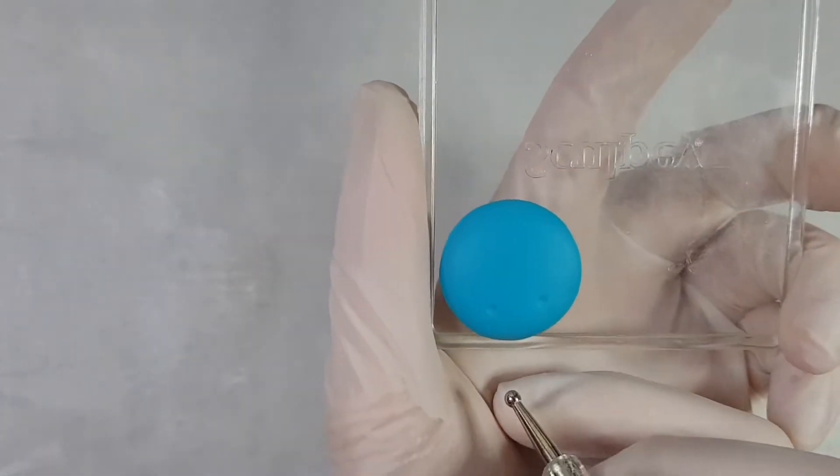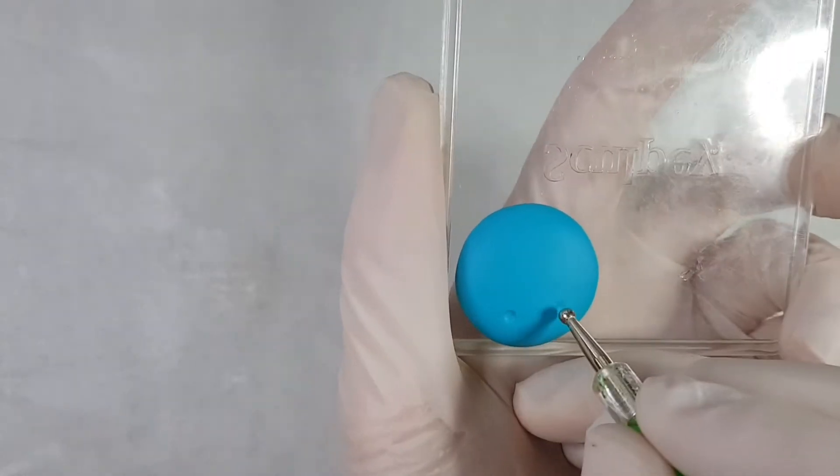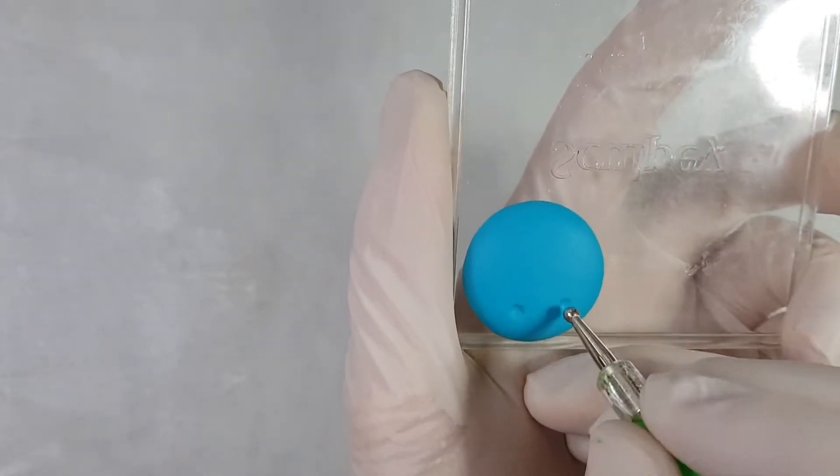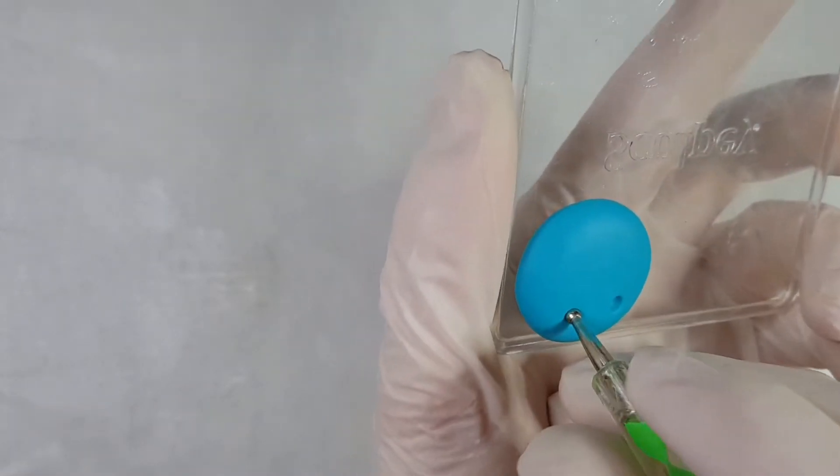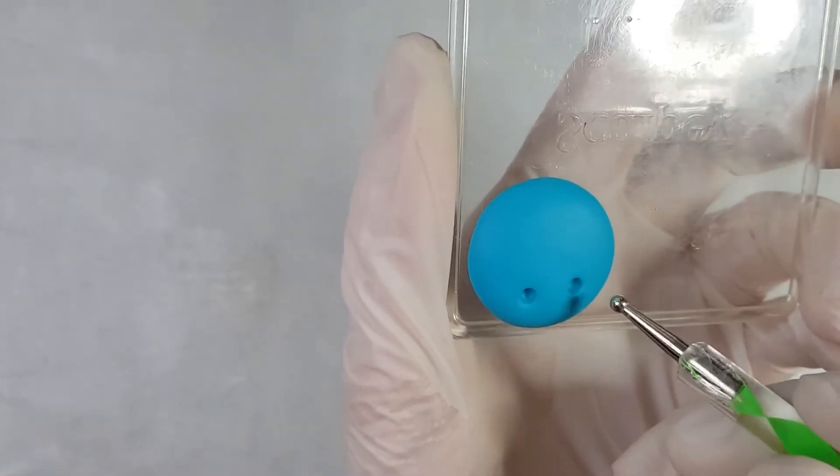Start with the eyes and use a dotting tool to mark out the positioning. Getting the space and level of the hole is important to make sure that the eyes sit even. Once you are happy with the positioning, gently press down making the hole about the size of the tool's tip.